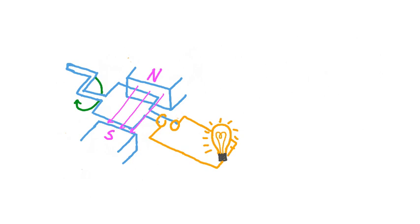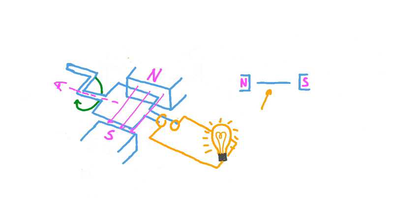It will be helpful to get a bit of a different vantage point on this generator. Let's say that rather than looking at it from this direction, we place our eye out along the axis of rotation of the coil. Looking at it from this perspective, we see the north pole of the magnet over here, the south pole over here, and in between the two, we see the coil arranged horizontally. Since we're looking at the coil end on, it looks like just a flat line, but actually it's a rectangular coil.